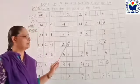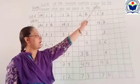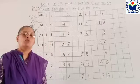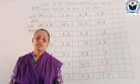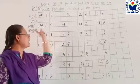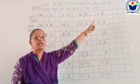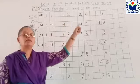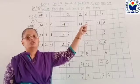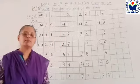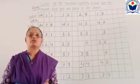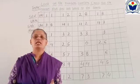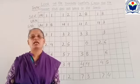Jo yahaanpere number diya hai, usko cross out karna hai. Magar kaisi? Jo yahaanpere piece hai, so it does not belong. What is the meaning of 'belong'? It means 'beech mein.' Jo number serial mein hai, belong hai. Jo serial mein nahi aata hai, us number ko aapko cross out karna hai.